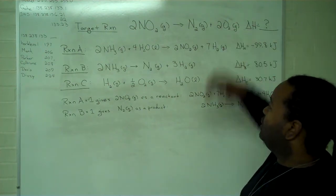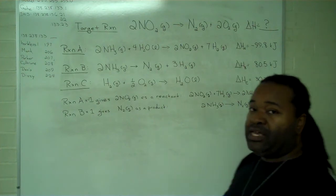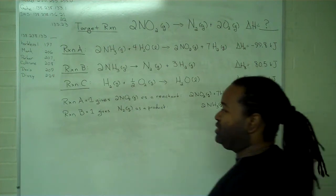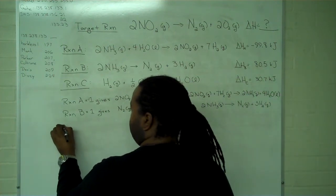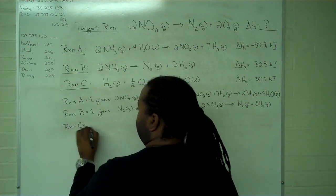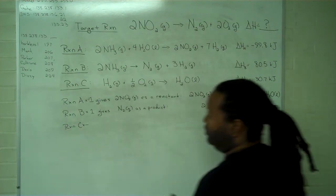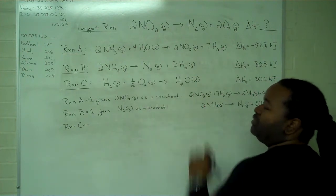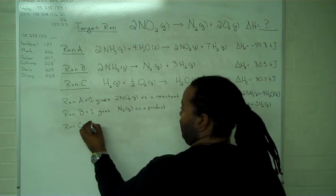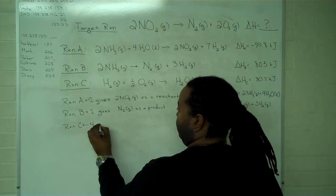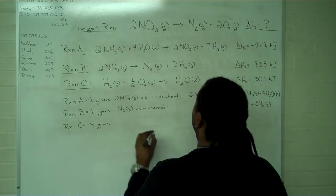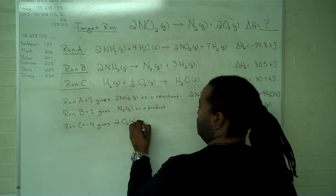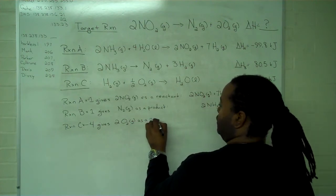So the last thing I need is two moles of oxygen as a product. Reaction C has one half mole of oxygen as a reactant, and this requires me to do two things in one step. I can multiply by a negative number to reverse reactants and products with each other, and I can scale up the size of this reaction. So I'll need to multiply everything by negative four, and this will give me what I need: two moles of oxygen gas as a product.